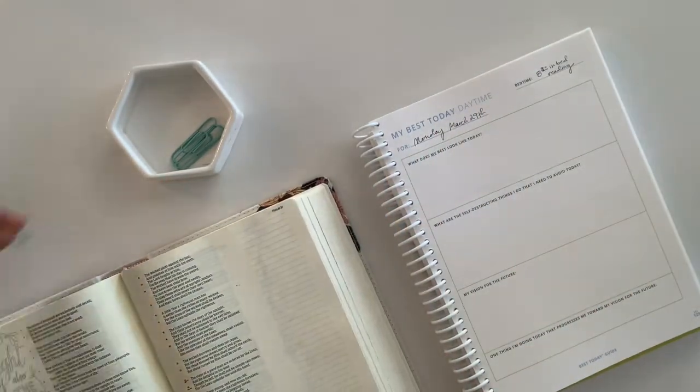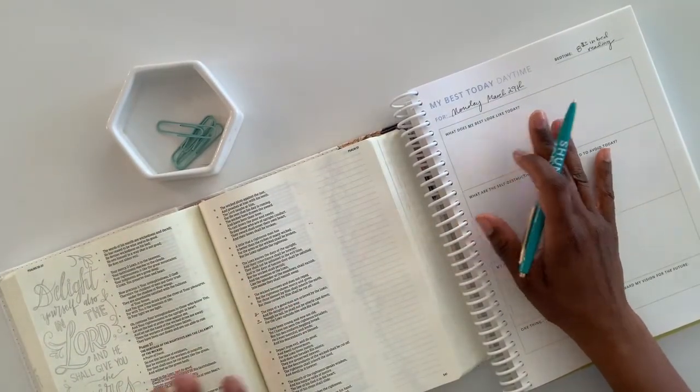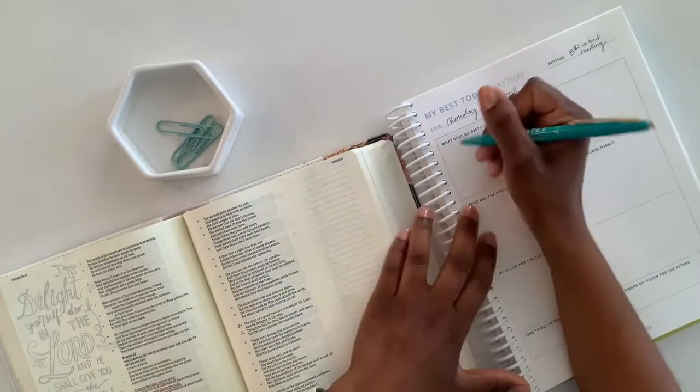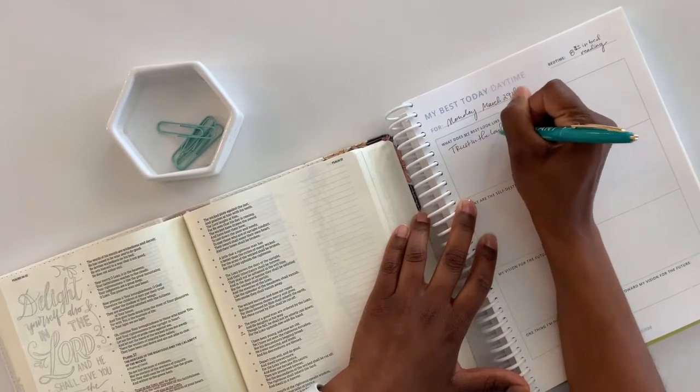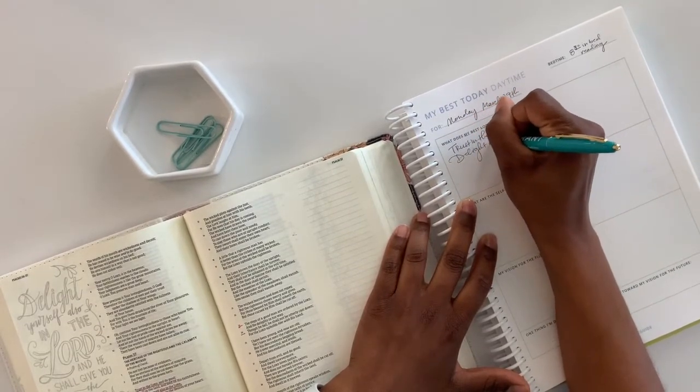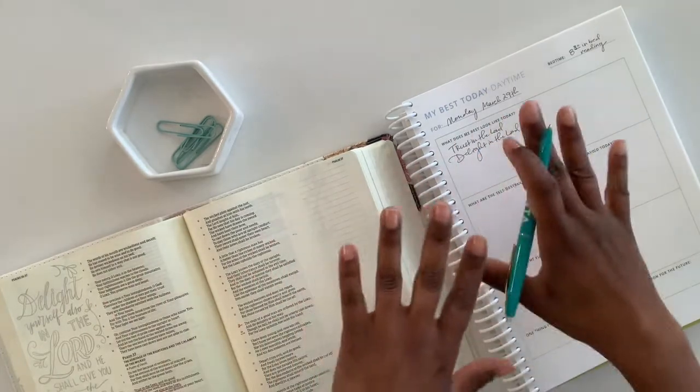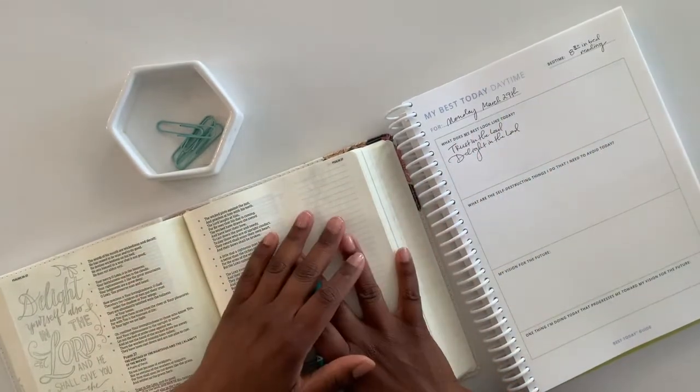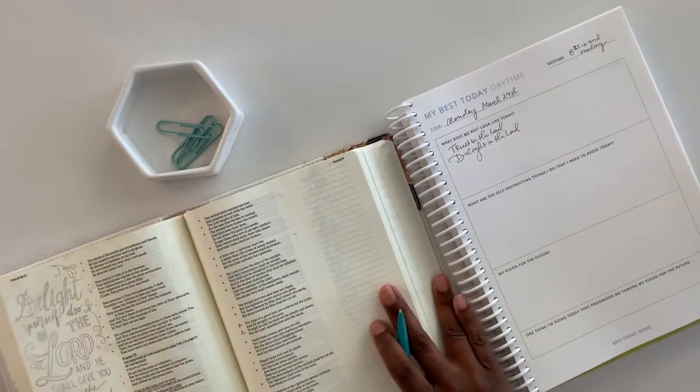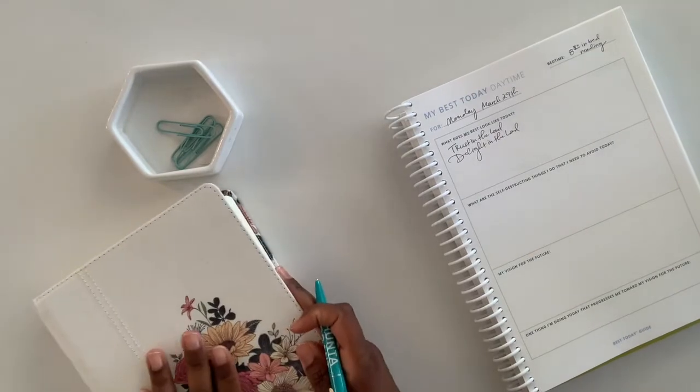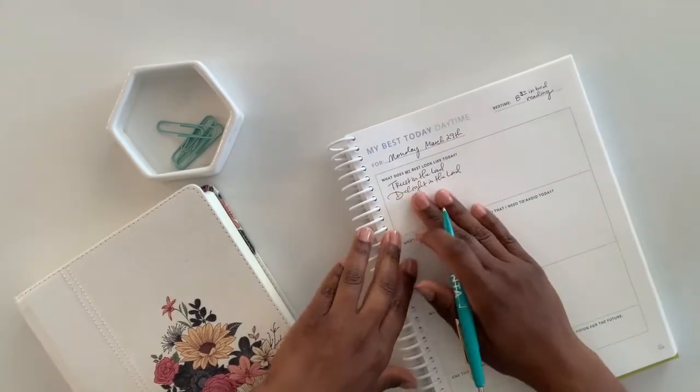But also I might pull in something from my morning time reading, because this is what I've done before I get to the best today guide. And I may say, okay, well, this morning I was reading about how important it is to trust in the Lord. And so I might say after reading that, okay, my best today looks like remembering to trust in the Lord and delight in the Lord. And so I love being able to incorporate, you know, my morning reading time or what I might journal about something that I might even discover while journaling in the morning and incorporating that into my best today. So that's one thing that I'll do by including my morning time, you know, what I might have gathered or gotten out of my morning reading. I'll add that in here.